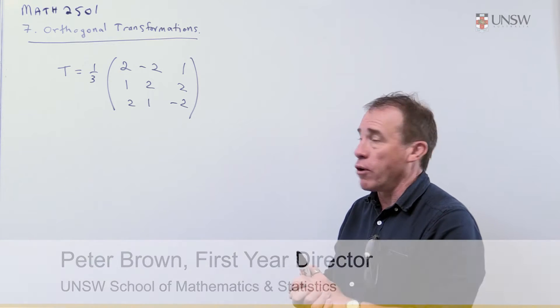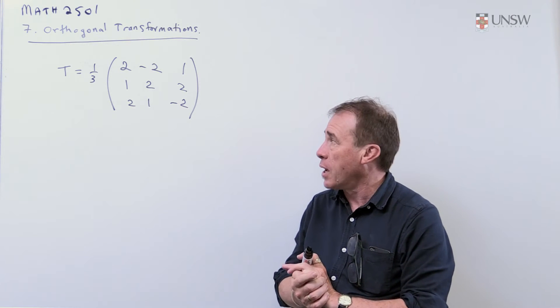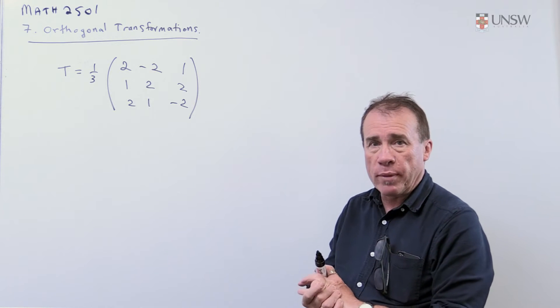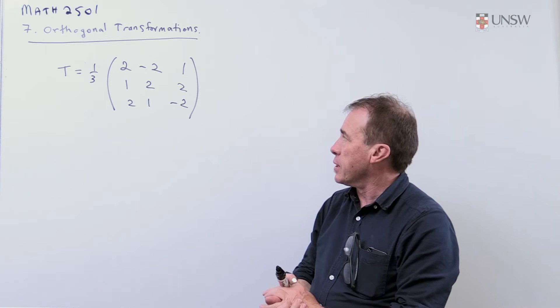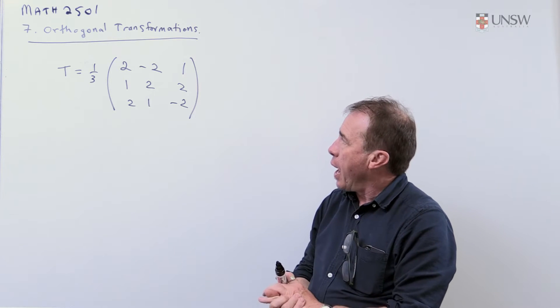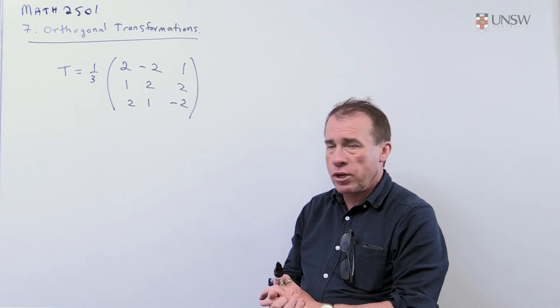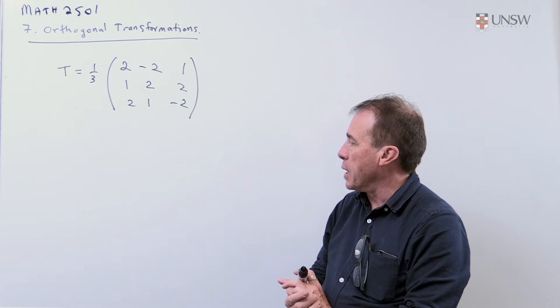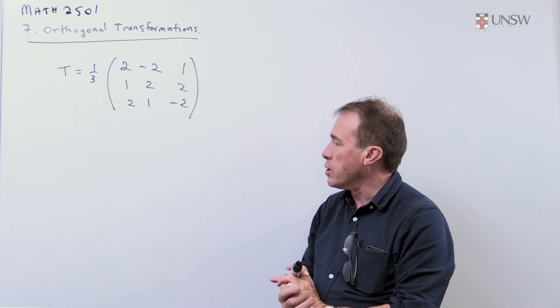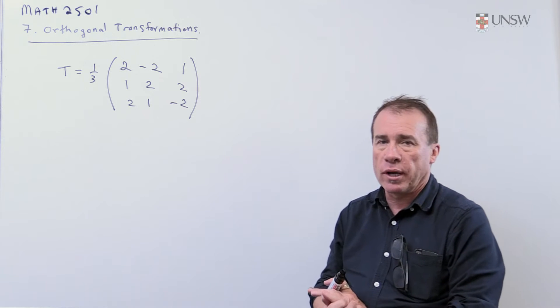This is Math 2501 and I'm doing some problems on Chapter 7 on orthogonal transformations. In this problem they give you a matrix T which is one third of this matrix here.